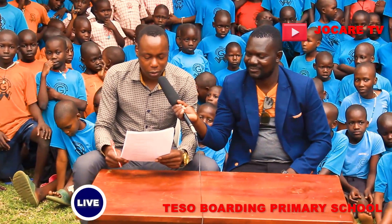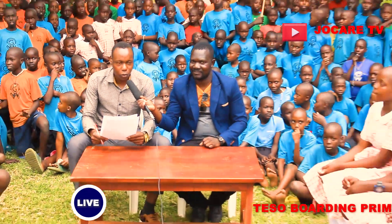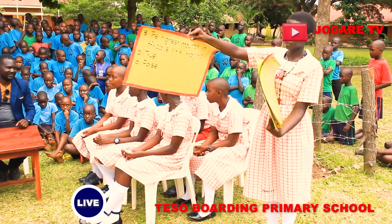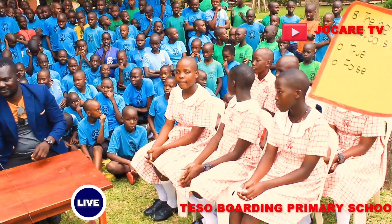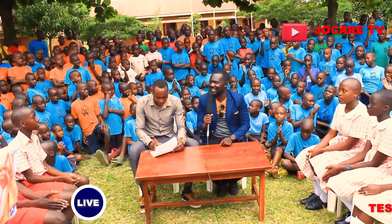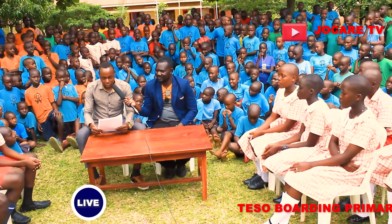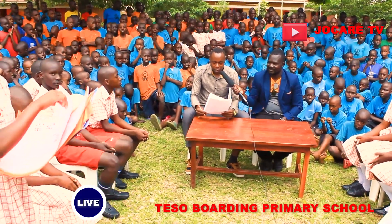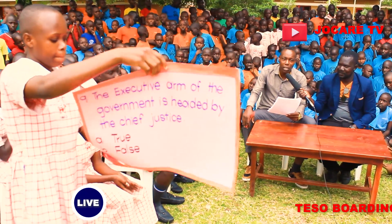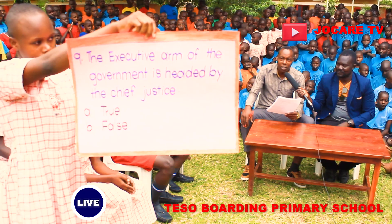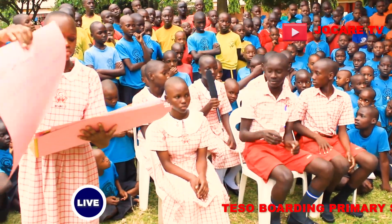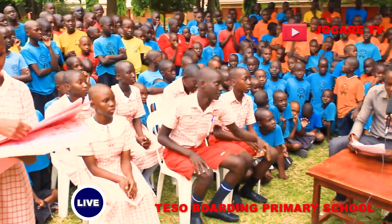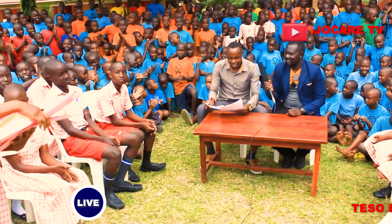The next question: The highest mountain in Africa is Mount Kilimanjaro. Option A: True. Option B: False. The answer is True — a beautiful answer. Next question: The executive arm of the government is headed by the Chief Justice. Option A: True. Option B: False. The answer is False. Correct — a good one.